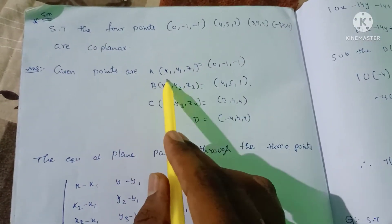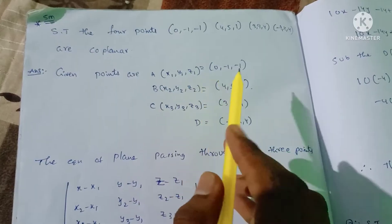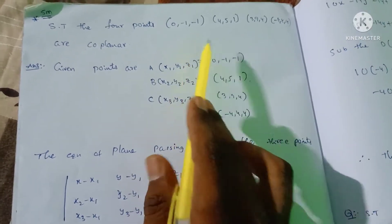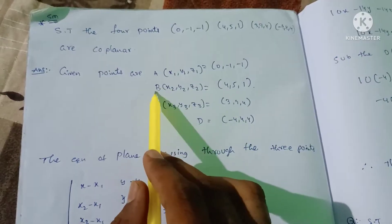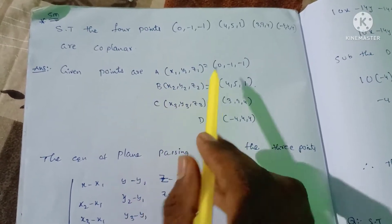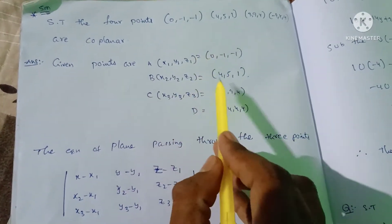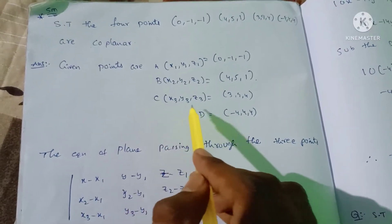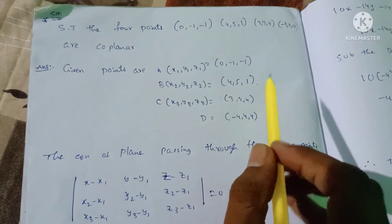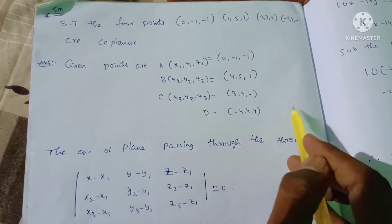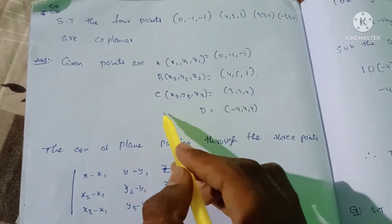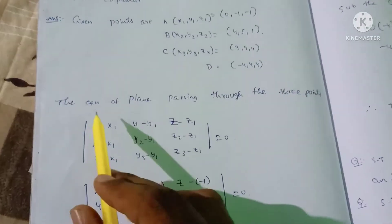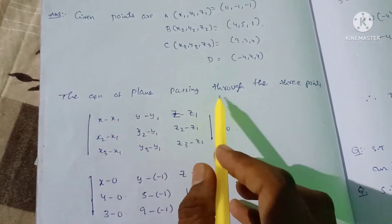Point A: (x1, y1, z1) = (0, -1, -1) is the first point. We have to label the second point B, and point C: (x3, y3, z3) is the third point. The fourth point D is also given. To form the plane equation, we pass it through 3 points.